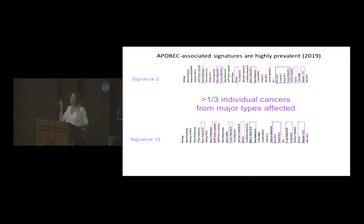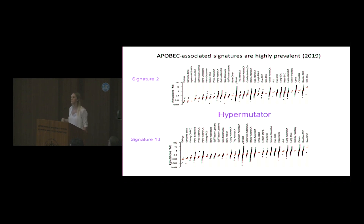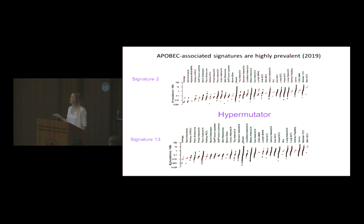Looking at individual numbers of mutations that these signatures contribute — here each cancer is a dot belonging to its specific cancer type, and on the y-axis are numbers of mutations attributed to signatures 2 or 13, taken from COSMIC — whereas in some cases these signatures contribute small burdens of mutations, most commonly they contribute a high mutational load. The underlying mutational process is a hypermutational one. When you compare the two lists, they are actually the same cancer samples, with signatures 2 and 13 found together, albeit at different proportions.